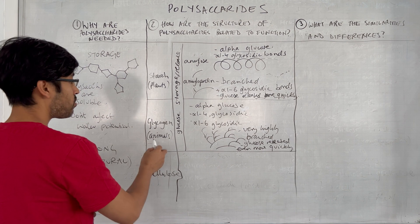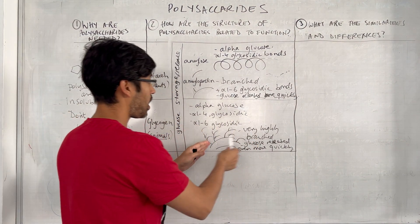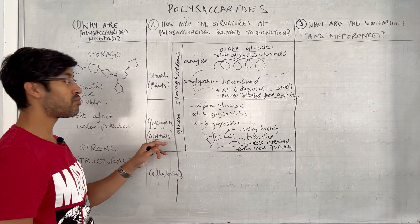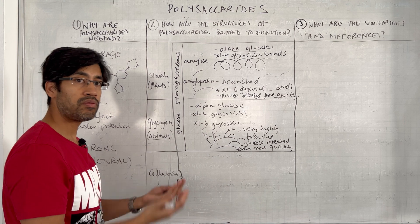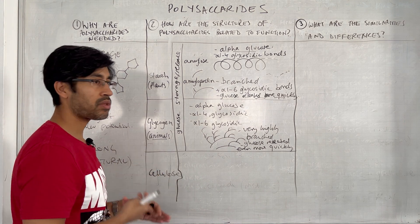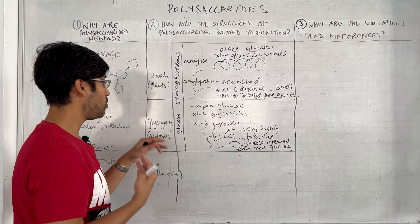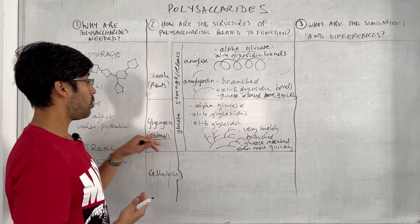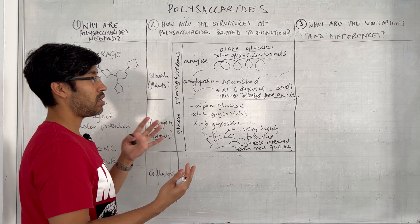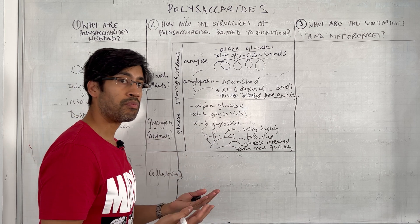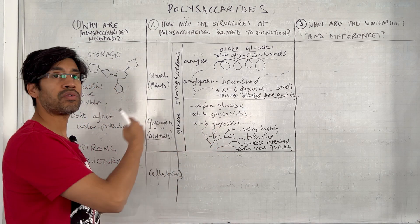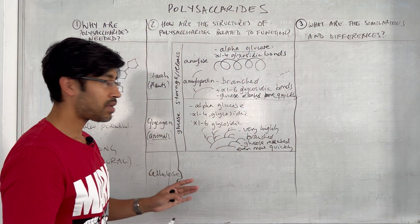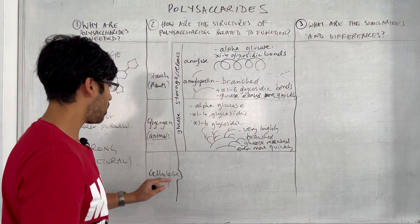The reason glycogen has to release glucose even more quickly is because it is the storage form in animals. Animals move around, have muscles and a nervous system, are homeostatic, and can control body temperature — all of which takes energy. That energy requires ATP to be produced much more quickly, so glucose needs to be released much more quickly in animals than in plants.